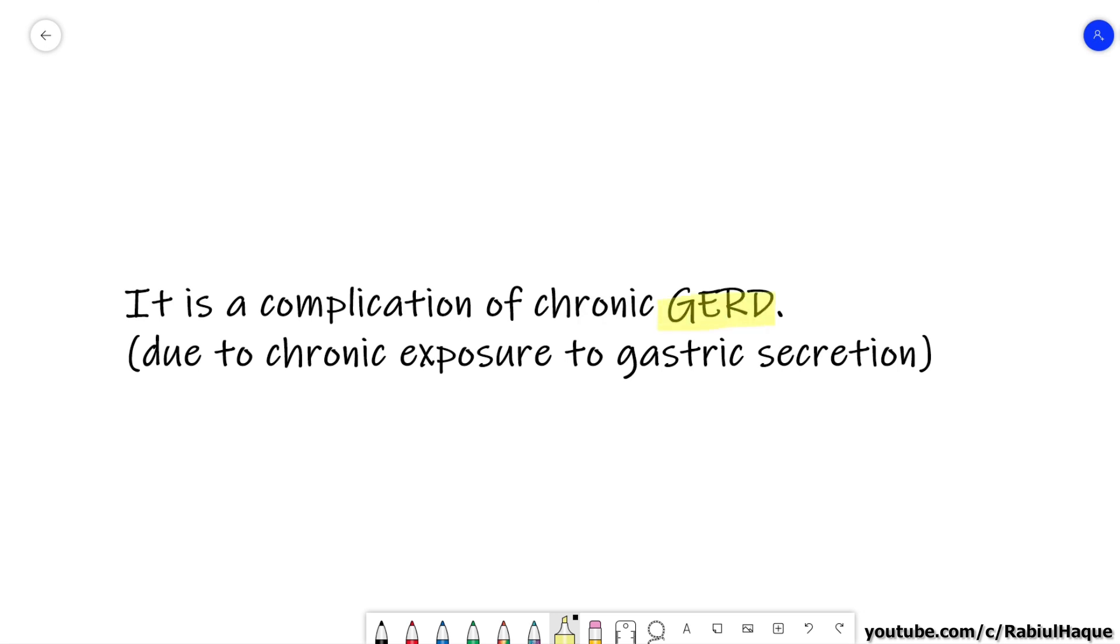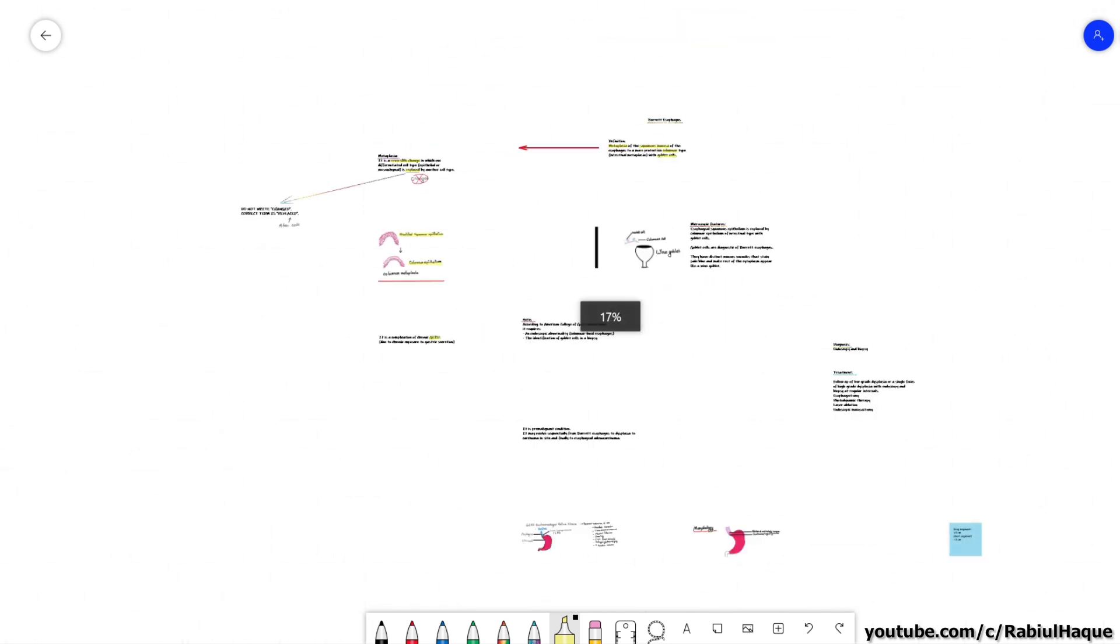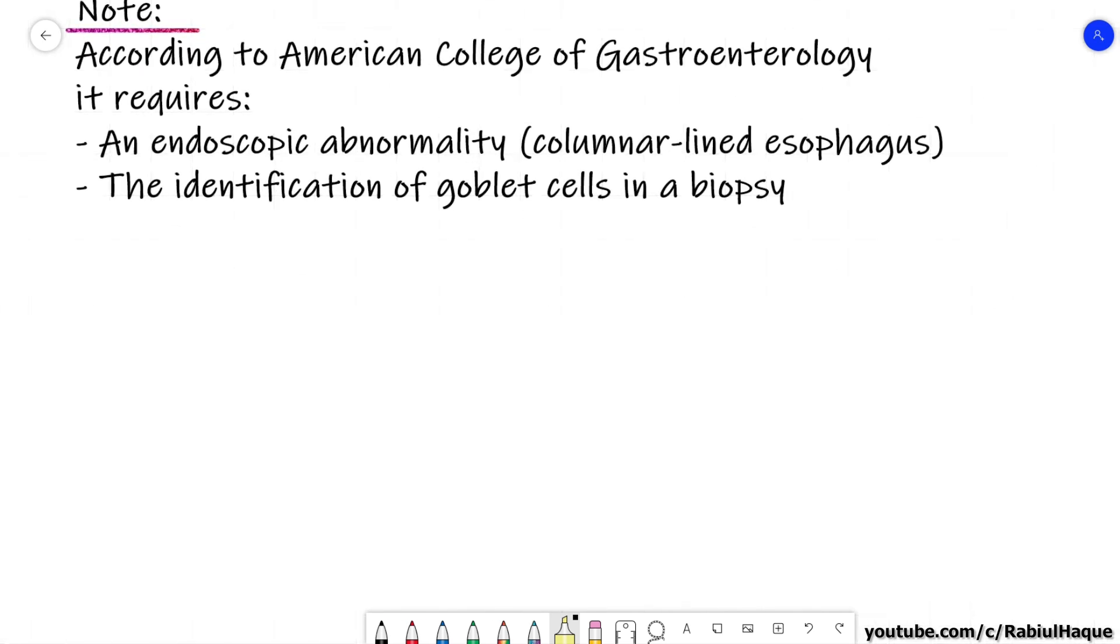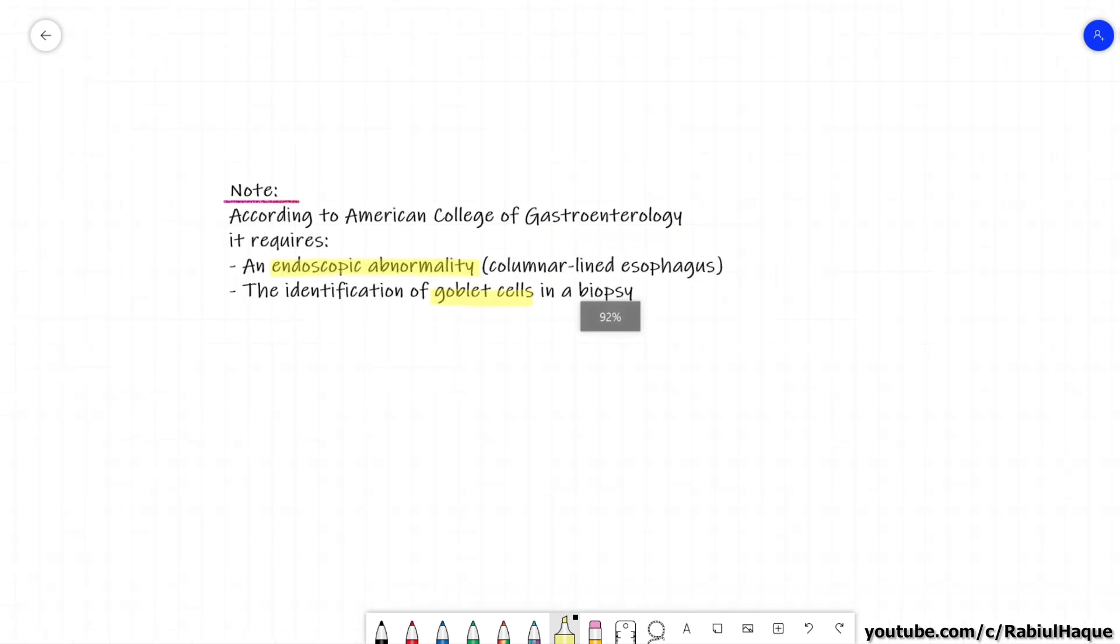So this is the definition and why is this thing happening? It is often happening as a complication of gastroesophageal reflux disease. Now regarding the goblet cells, always remember, according to the guidelines provided by American College of Gastroenterology, Barrett esophagus requires endoscopic abnormality. There should be columnar lined esophagus and also there should be identification of goblet cells in a biopsy that is taken from that abnormal area.